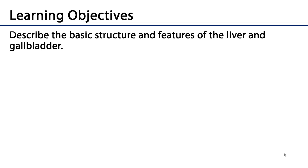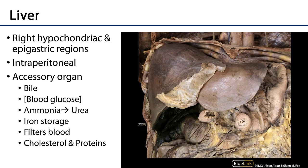Let's talk about the liver. In this video we'll discuss the basic structure and features of the liver and gallbladder. The liver is a large intraperitoneal organ found in the right hypogastric and epigastric regions of the abdominal pelvic area. It's an accessory organ of digestion, meaning it's not a part of the digestive tract or gut tube, but it does secrete substances into that gut tube. It performs a variety of functions.